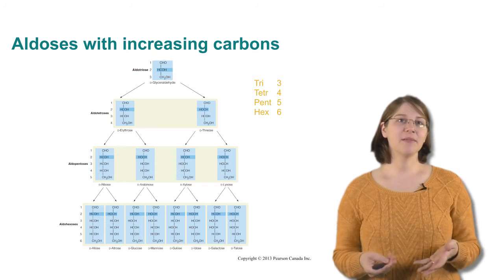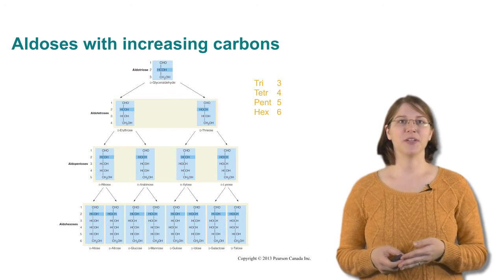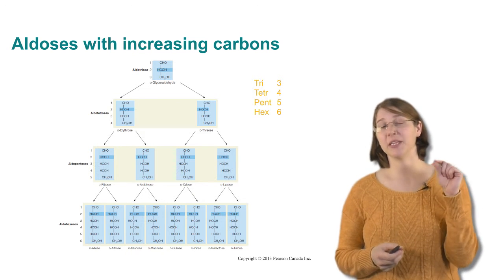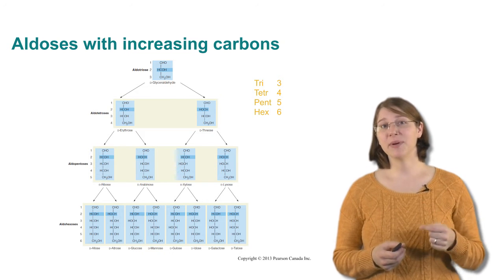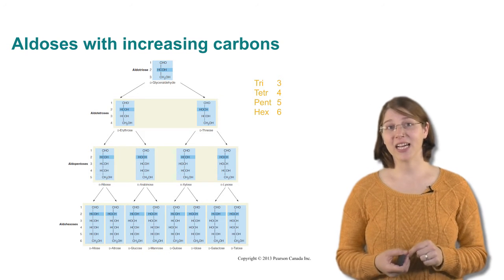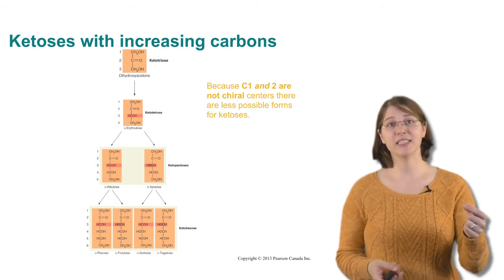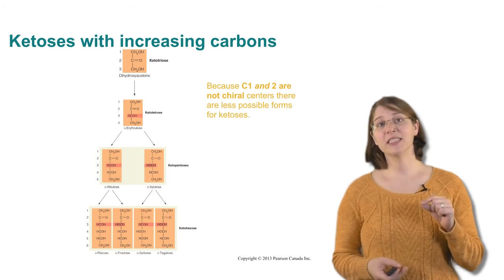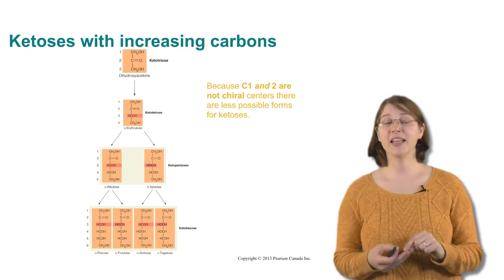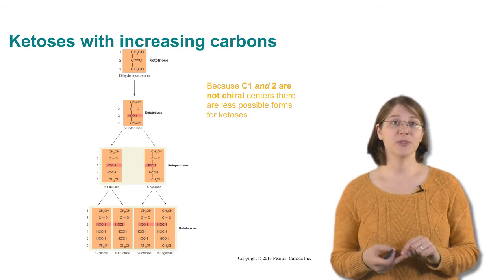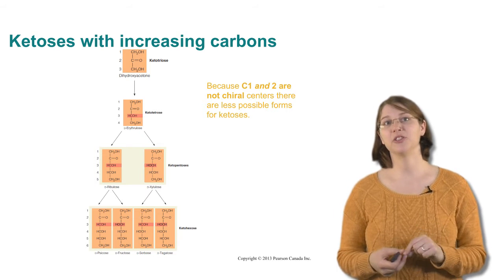And when we name sugars aldose, what we're referring to is that the first carbon in the sugar has a doubly bonded oxygen called an aldehyde. There's a second type of sugar that has the doubly bonded carbon on the second carbon. And that's called a ketose or a ketone sugar.